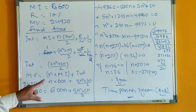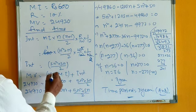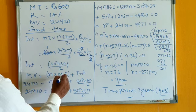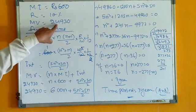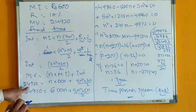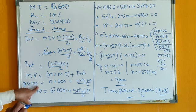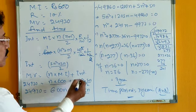Now, amount is equal to N into MI plus interest. N is number of installments into MI. MI is given 600, amount is given 24930, so that 24930 is equal to N into 600 plus interest.